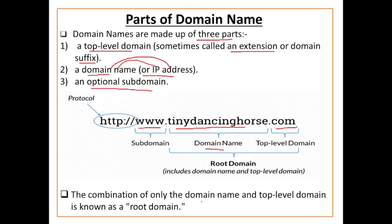The combination of only the domain name and the top level domain is known as the root domain. तो root domain क्या है — domain name और top level domain को combine करके आपका root domain create होता है। So domain name के तीन parts हैं: top level domain (domain extension या domain suffix), domain name, और optional sub domain।